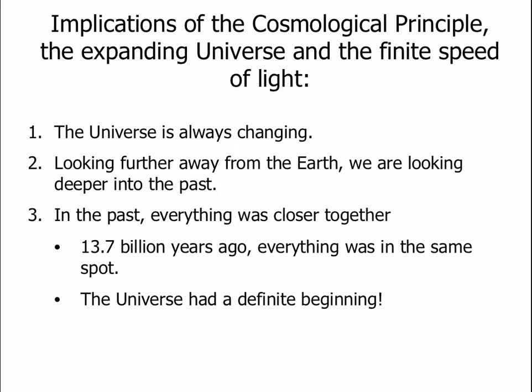So if we combine our knowledge of the expanding universe, the finite speed of light, the cosmological principle, and Olbers paradox, we come up with these implications. First of all, the universe is changing. It's not static. Second, when we look further away from the earth, we're looking further into the past. And third, in the past, everything was closer together because the universe is expanding. And if you go back far enough, you find that 13.7 billion years ago, everything was in the same spot. Every star, every galaxy would have been in the same spot. And this implies that the universe had a definite beginning.